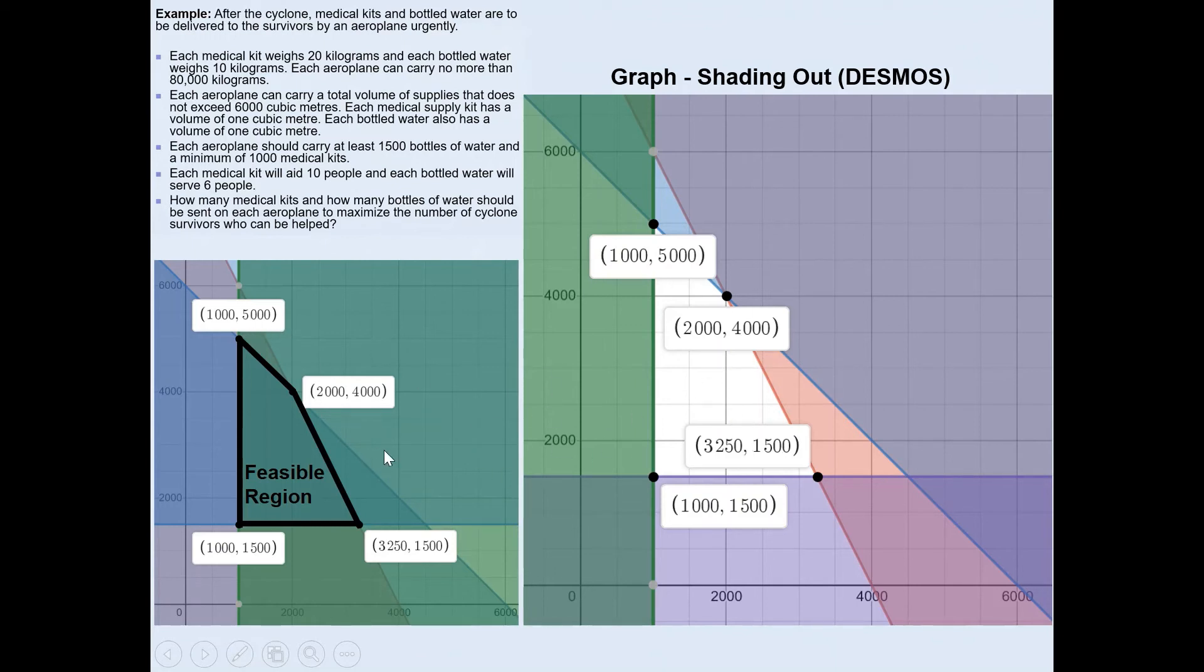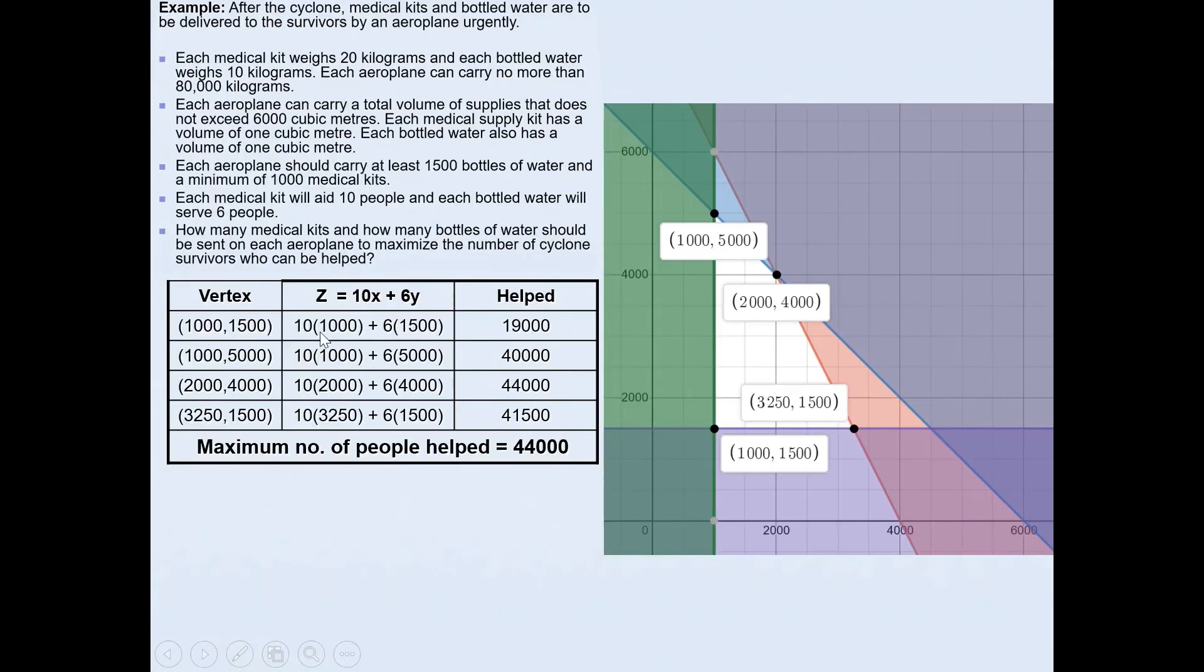Once you've got the vertices, then you will need to put these coordinates in the objective function to see which one gives the maximum. I've already filled in the table for you. I'd suggest if you can pause the video and do it yourself and see if your answer matches. So the vertex 1000 and 1500, 1000 is the x coordinate and 1500 is the y coordinate. Make sure you substitute these in the right spots. The objective function was given by 10X plus 6Y because they estimated that each medical kit will aid 10 people.